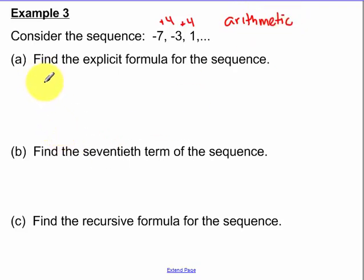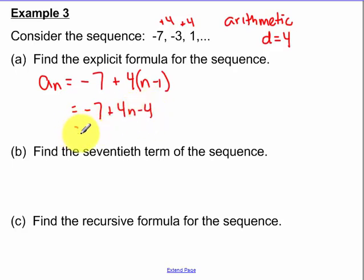So the explicit formula that I gave you on the first slide: A1 plus D, the common difference, which is 4, times N minus 1. And I want you to simplify that. So A sub N equals 4N minus 11. Now we plug in the 17th. So I'm looking for 4 times 17 minus 11, and that is equal to 57.